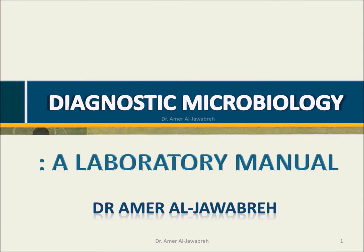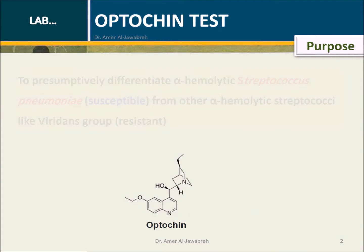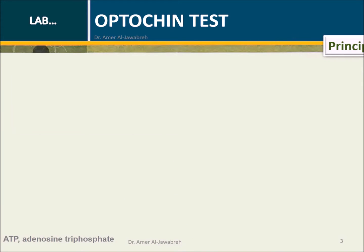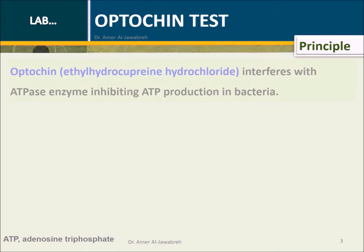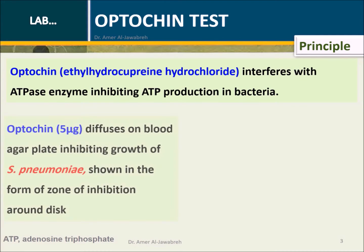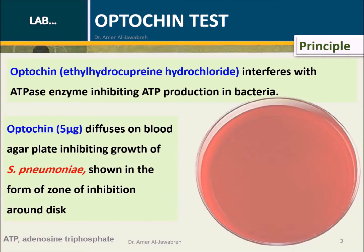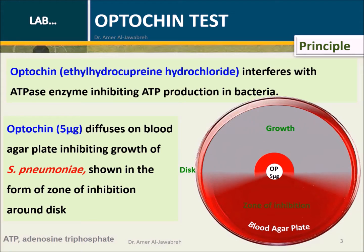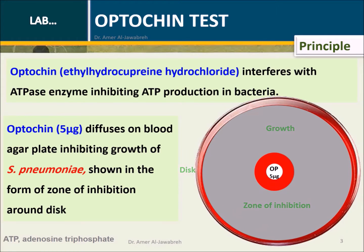Diagnostic Microbiology Laboratory Manual. Purpose: to presumptively differentiate alpha-hemolytic Streptococcus pneumoniae (susceptible) from other alpha-hemolytic streptococci like the viridans group (resistant). Principle: Optochin (ethylhydrocupreine hydrochloride) interferes with the ATPase enzyme, inhibiting ATP production in bacteria. Optochin 5 micrograms diffuses on blood agar, inhibiting the growth of S. pneumoniae.